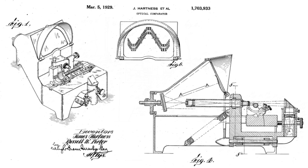The first commercial comparator was developed by James Hartness and Russell W. Porter. Hartness' long continuing work as the chairman of the U.S.'s National Screw Thread Commission led him to apply his familiarity with optics from his avocations of astronomy and telescope building to the problem of screw-thread inspection. The Hartness screw-thread comparator was for many years a profitable product for the Jones and Lamson Machine Company, of which he was president.